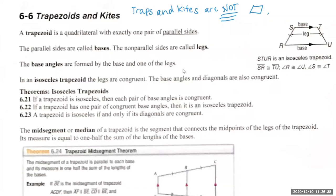My daughter was doing IXL the other day and she had to classify things as trapezoids or not. She kept getting it wrong — she kept thinking it was two, like parallelograms. I had to correct her and say it's one set of sides that are parallel. So if you guys can underline that — that's one of the things that make it not a parallelogram. It only has one pair of parallel sides.